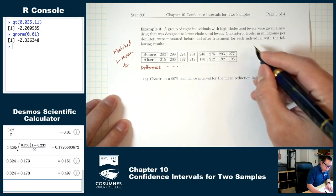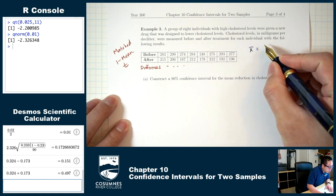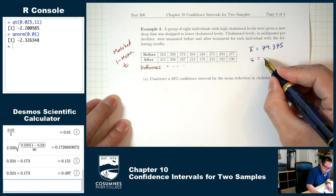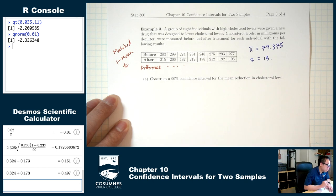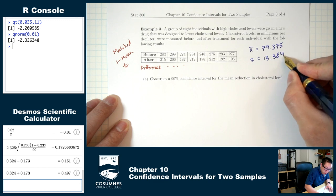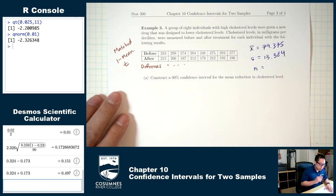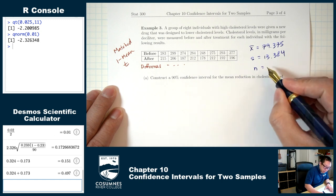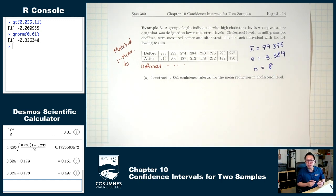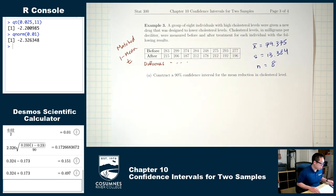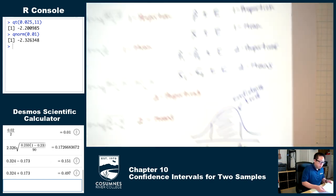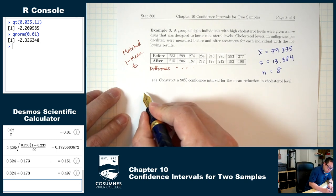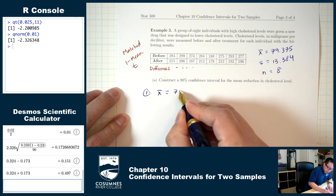The mean of the differences, x-bar, was 79.375. The standard deviation s, rounded to three decimal places, is 13.384. The sample size n is 8 (eight differences). This is a one mean situation, so the end result is x-bar plus or minus the margin of error. Step one is just x-bar: 79.375.